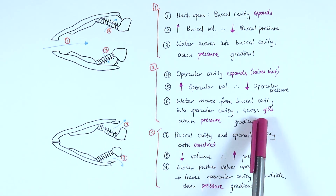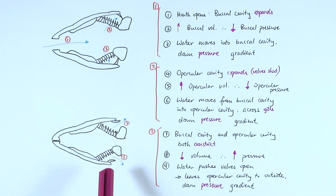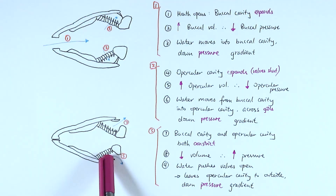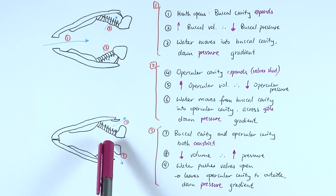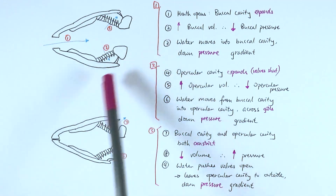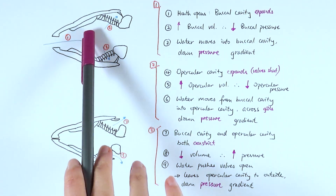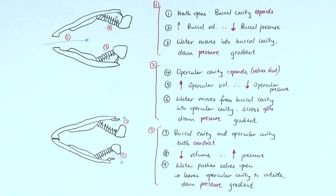It is at this step that gas exchange actually occurs across the gills. Then in the third stage, both the buccal cavity and the opercular cavity constrict inwards, decreasing volume and increasing pressure above the outside water pressure, so water pushes open the valves and leaves the opercular cavity to the outside, down the pressure gradient. Once done, the process reverses: the valves shut, the buccal cavity floor lowers, the mouth opens, the buccal cavity expands, and the whole cycle repeats.